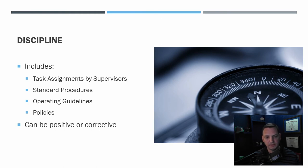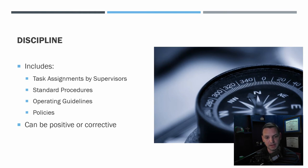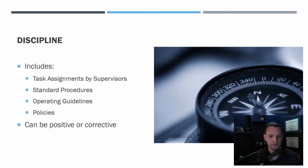Discipline refers to task assignments by a supervisor, or standard operating procedures, operating guidelines, or policies. These disciplines can be positive — a standard procedure is there because something happened or a better way was found, making your job easier or safer. Or it can be corrective — a supervisor saying this way isn't working and we need to correct it.